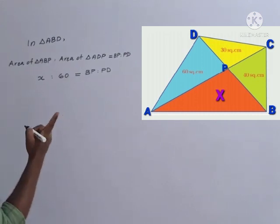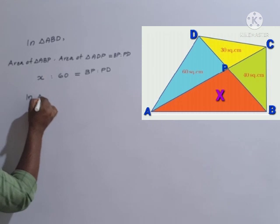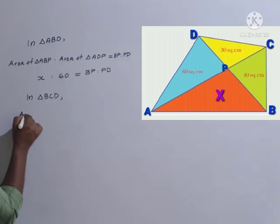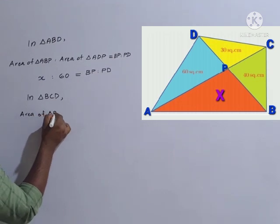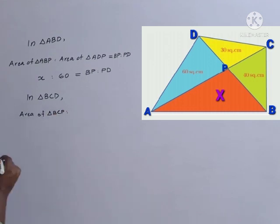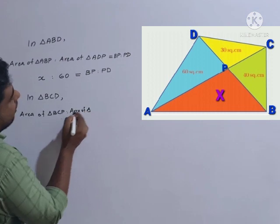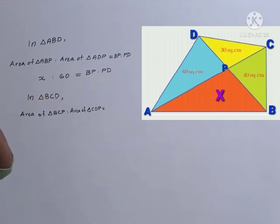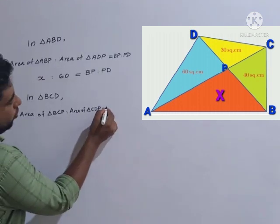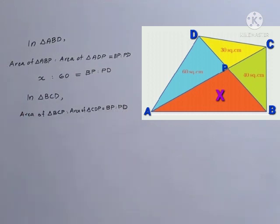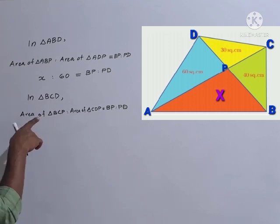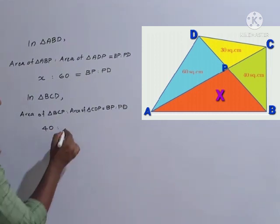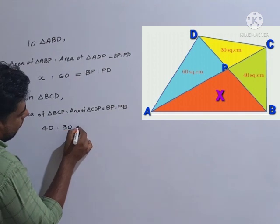Similarly, in triangle BCD, the area of triangle BCP to the area of triangle CDP equals BP to PD. The area of BCP is 40 and the area of CDP is 30, so 40 is to 30 equals BP to PD. This gives us equation two.